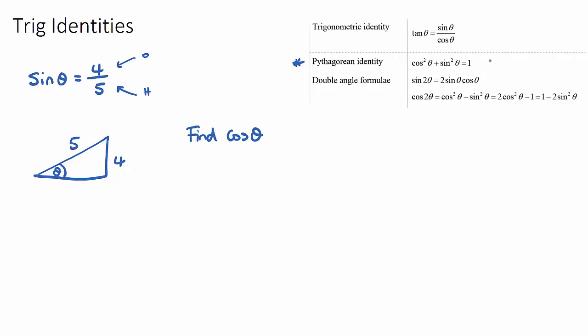I'll use the formula and then I'll show you why it makes sense. This formula says cos²θ + sin²θ is equal to 1. I know sin θ is 4/5, I just don't know cos θ. So I'll write cos²θ + sin²θ, which will just be my sine theta squared. This will be equal to 1.